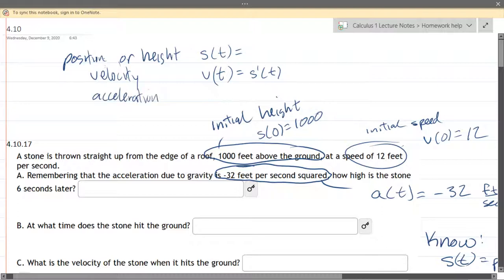Now we have acceleration a of t and that's how the velocity changes so it's v prime of t. If you want to relate it all the way back to s the position it's s double prime of t. It's the second derivative.